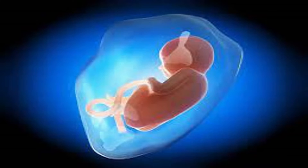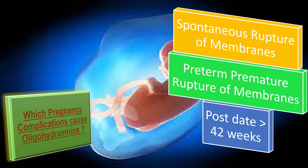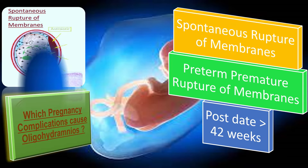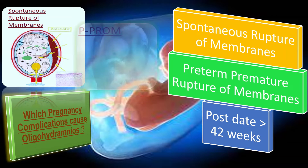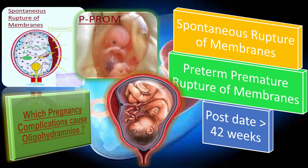Pregnancy complications that cause oligohydramnios include three conditions. First is spontaneous rupture of membranes. Second is preterm premature rupture of membranes. Third is post-date pregnancy, meaning more than 42 weeks of gestation.